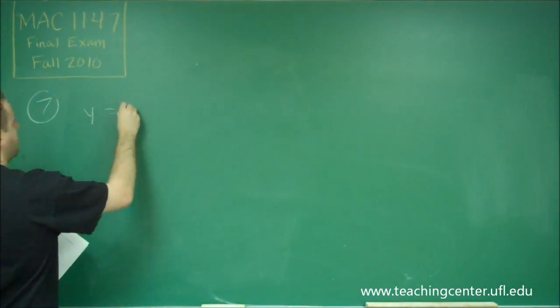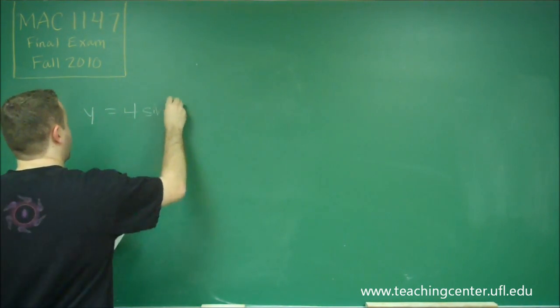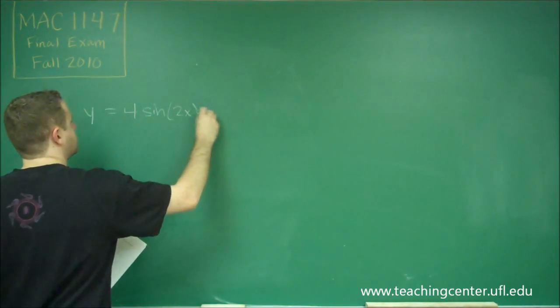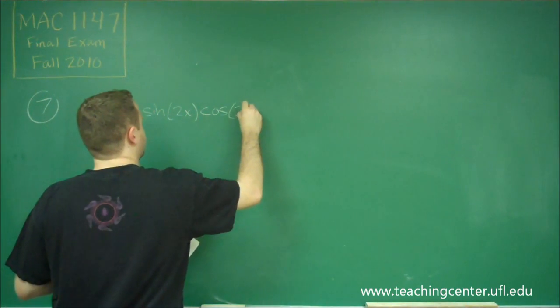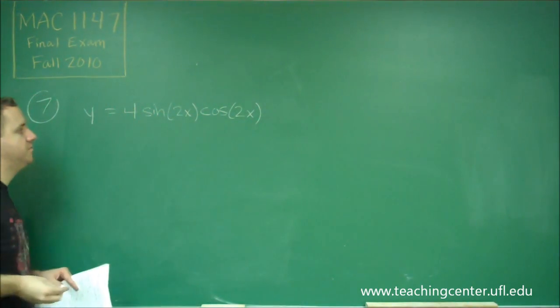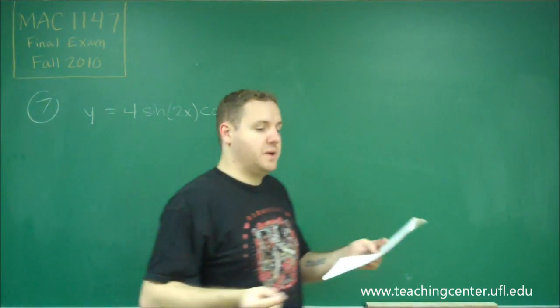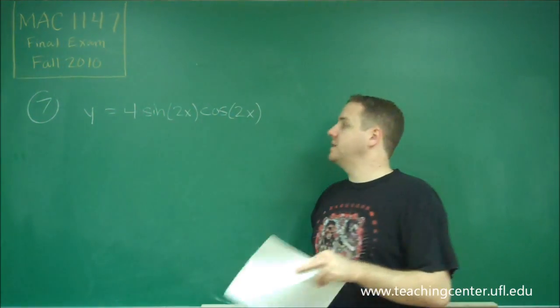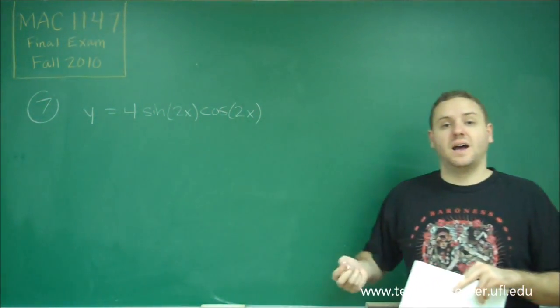So what we're starting out with is 4 sine 2x cosine 2x. Now in order to answer this question, what's the period of it, we need to transform this to just having a sine or cosine.